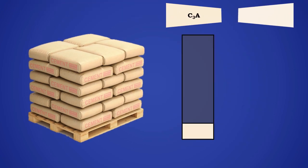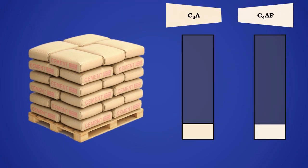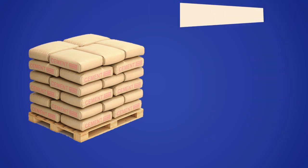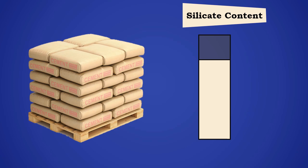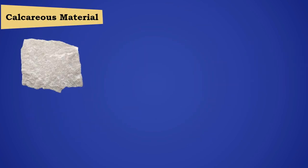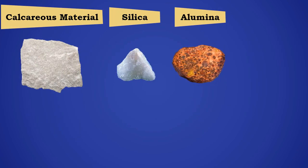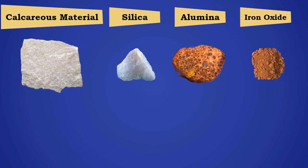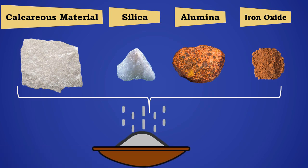This type of cement contains low C3A and comparatively low C4AF content, and high silicate content. C3A is generally limited to 5%. Sulfate resisting cement is manufactured by grinding and intimately mixing together calcareous and other silica, alumina, and iron oxide bearing materials.